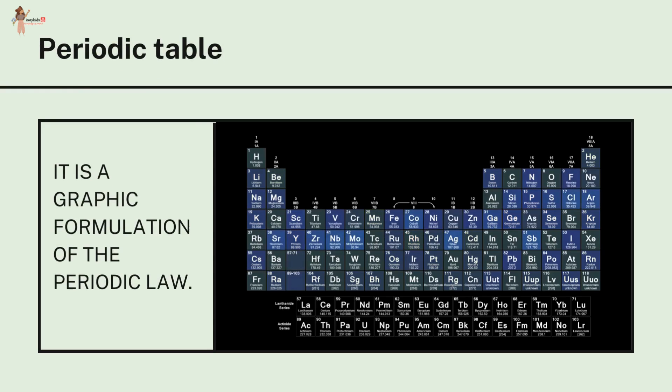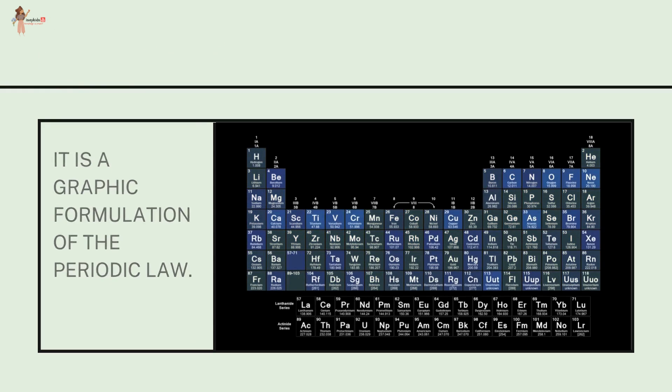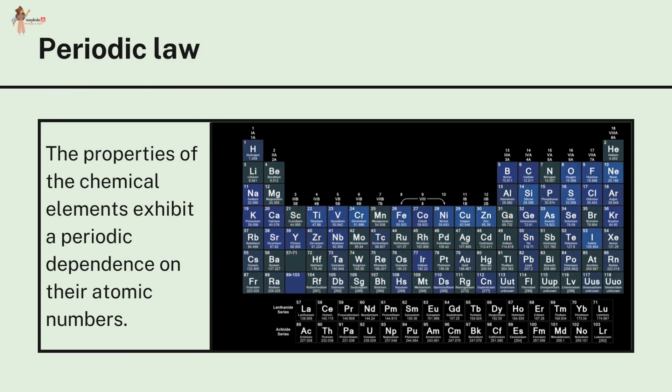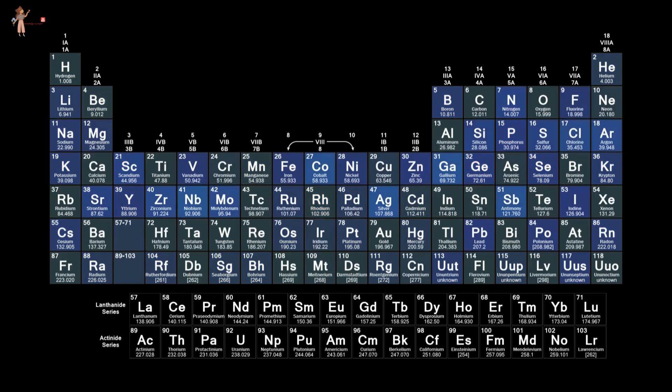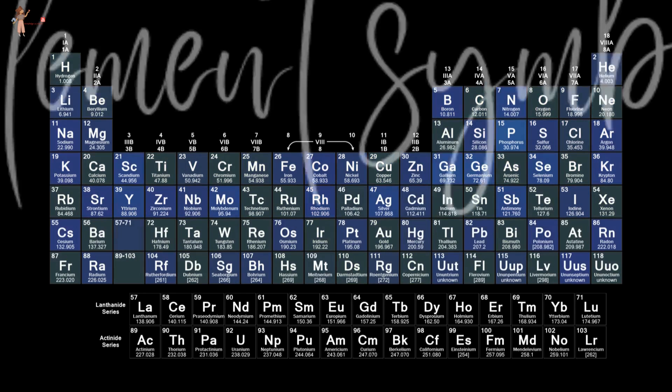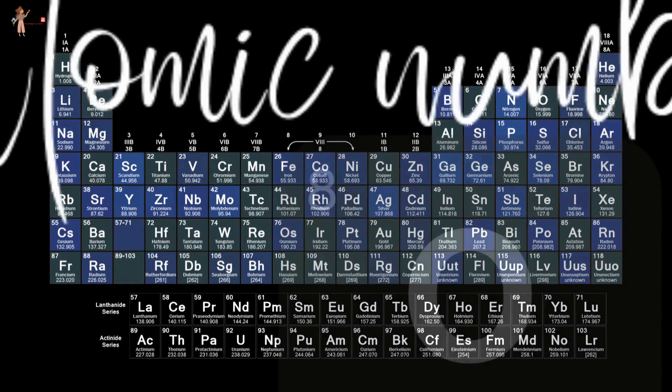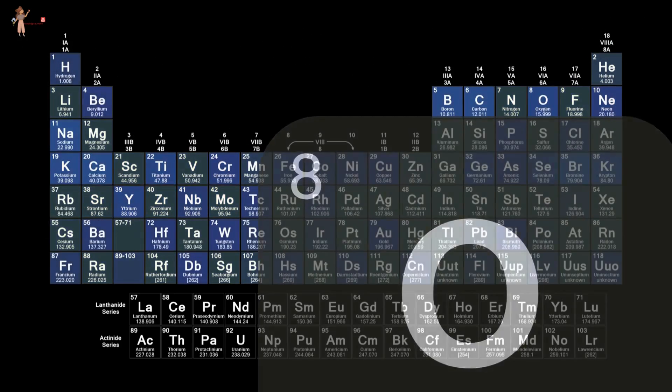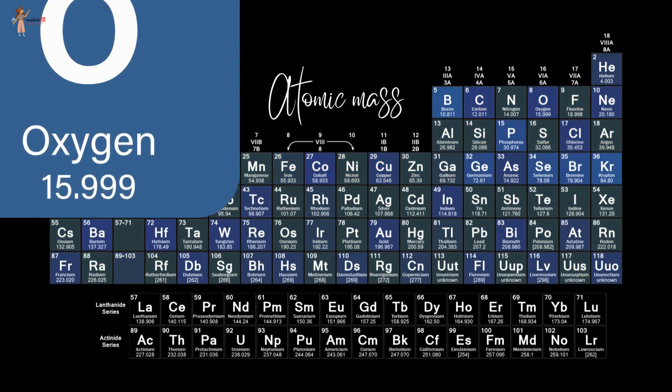It is a graphic formulation of the periodic law, which states that the properties of the chemical elements exhibit a periodic dependence on their atomic numbers. The periodic table lists element symbols, atomic number, and atomic mass at a minimum.